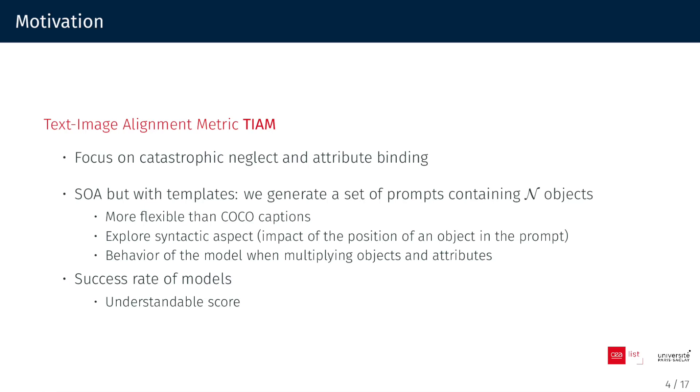We generate a set of prompts containing N objects, providing a more adaptable approach than the fixed COCO captions. This allows us to delve into syntactic aspects, such as studying the impact of an object's position in the prompt, or observing the model's behavior when dealing with multiple objects and attributes. The metric is easy to interpret, presenting results in the form of a success rate, meaning that TIAM indicates the proportion of images that align with the prompt.